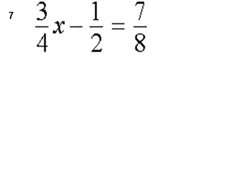Question 7: we get into our more difficult Grade 9 questions of fractional coefficients and constants. Three quarters x minus a half is equal to seven eighths.